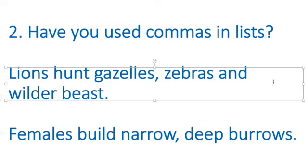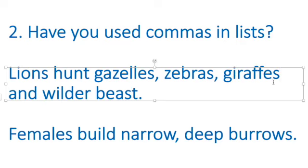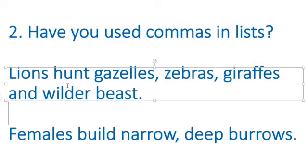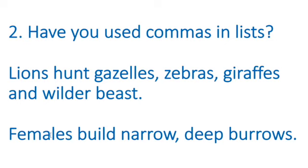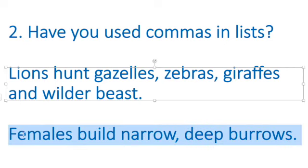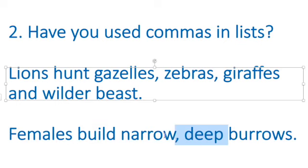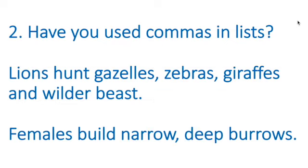If I had another animal — for example, maybe they hunt giraffes, I know they hunt baby giraffes — you can have an extra comma, but again you don't have it before the 'and'. Finally, if you've got more than two adjectives, you should have a comma. Look at this: 'Females build narrow, deep burrows.' So we've got a comma between 'narrow' and 'deep'. Press pause and check for commas and then come back.